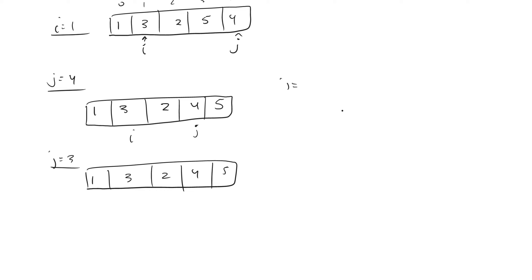When J equals two, I is here and J is here — this will be our last comparison. We ask: is A[J] less than A[J-1]? That is the case — these are out of order. We swap them and we're left with one, two, three, four, and five.